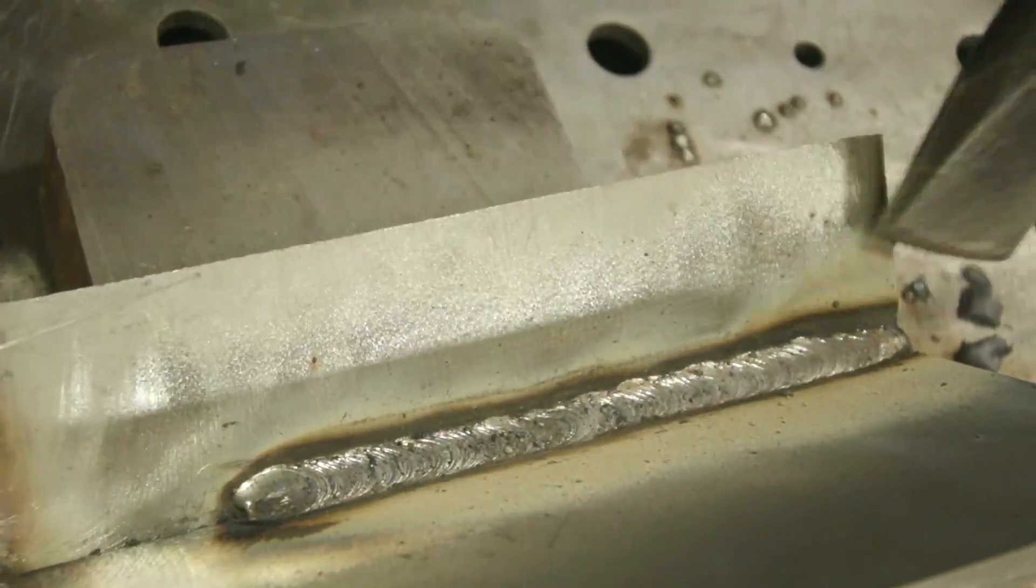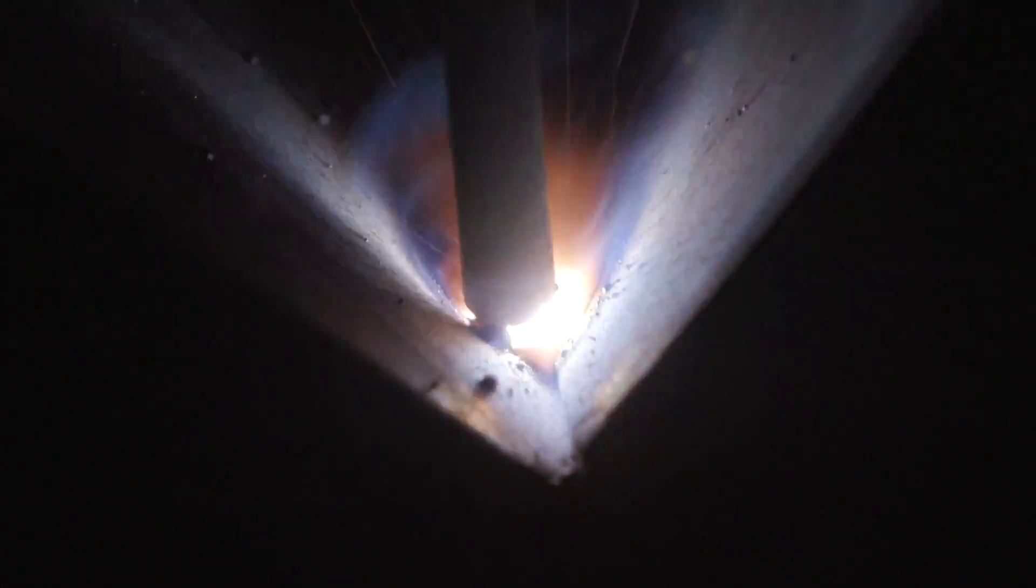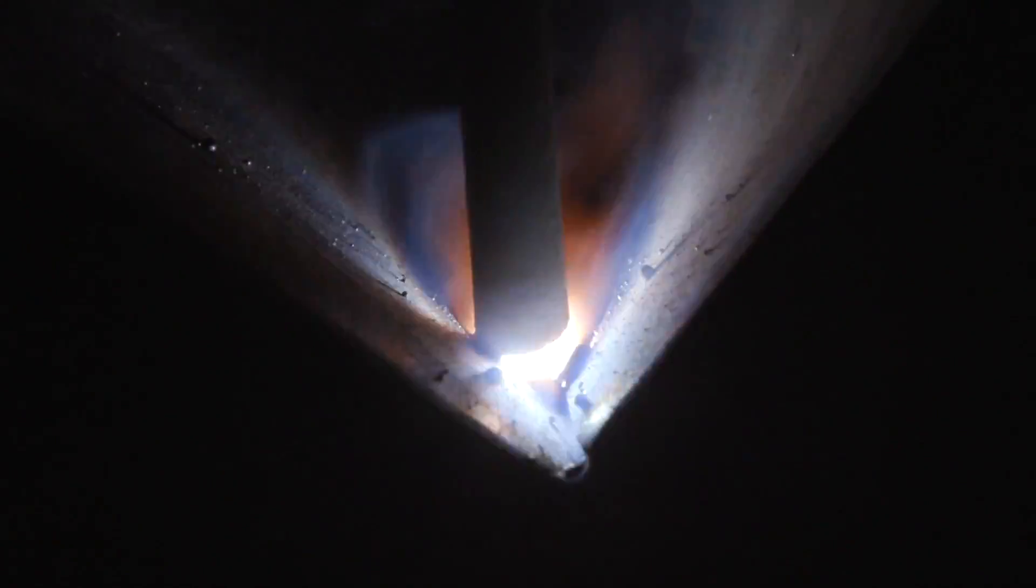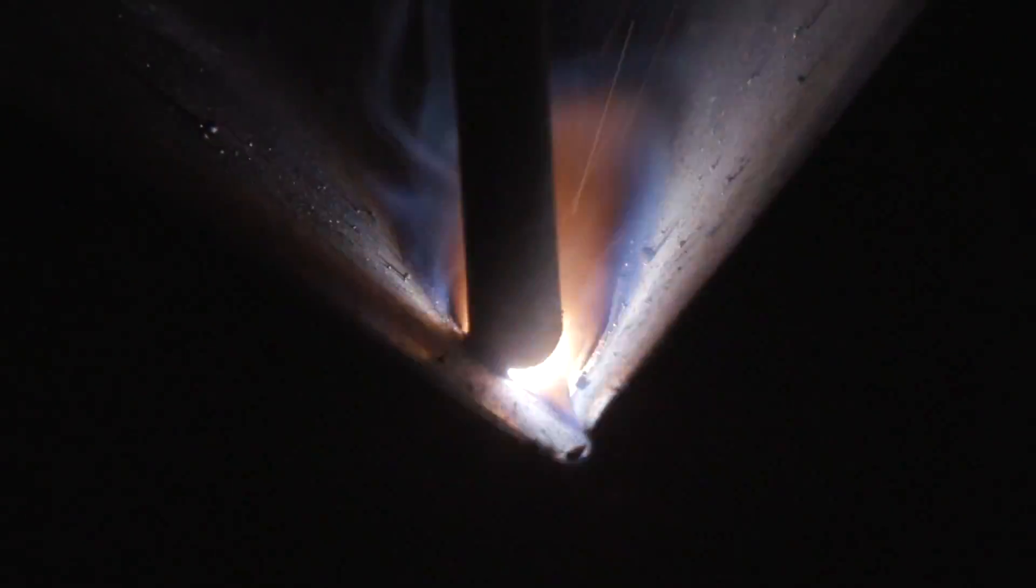All right. So you can see the rod pretty much runs itself. You just got to tell it exactly where to go. You noticed I favored the stainless steel side, which is that bottom plate, a little bit more just because it's a little bit more stubborn. Stainless is a tricky metal to weld, but if you focus a little bit more of that heat on there, you shouldn't have any problems. It flows right into that steel, no problem.